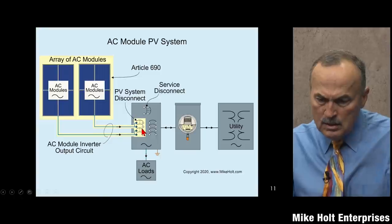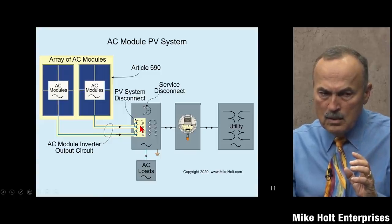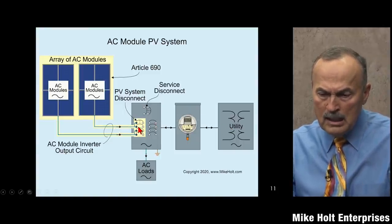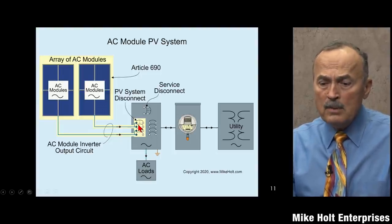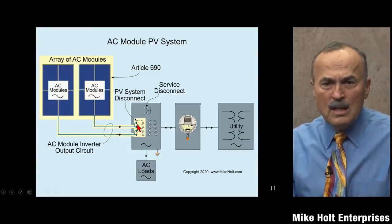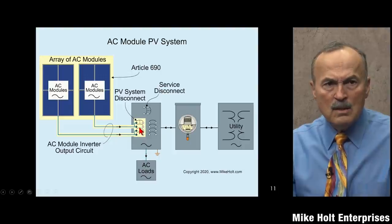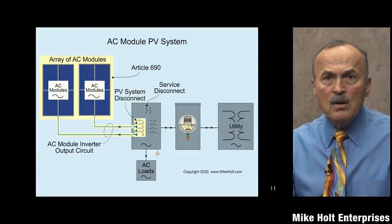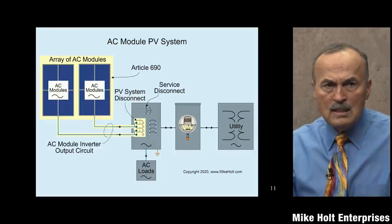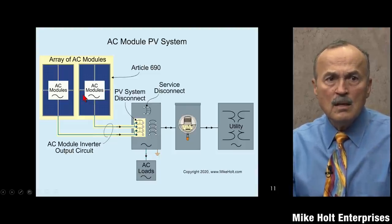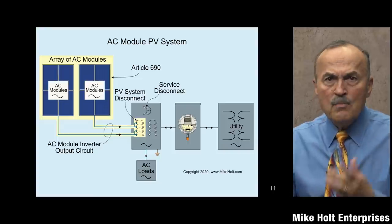When I connect the AC output here at 120 volts and connect it to the utility system, I'm interconnecting two power systems. That takes me to Article 705 - interconnected power production systems. There may be specific Article 705 rules about this connection point. AC modules seem to be a more common application in residential settings, though it is a more complex system conceptually.